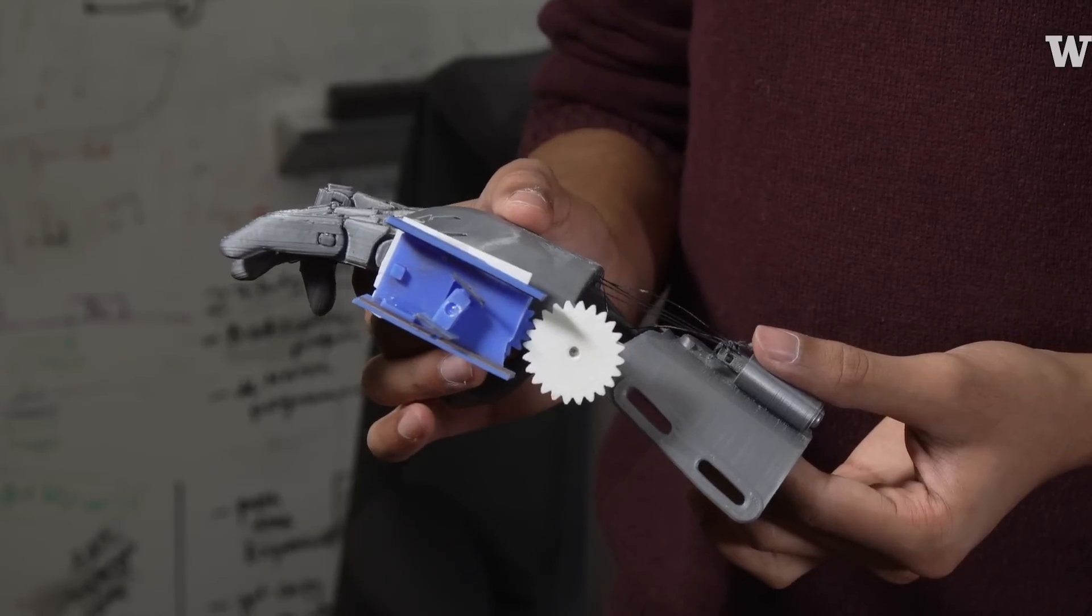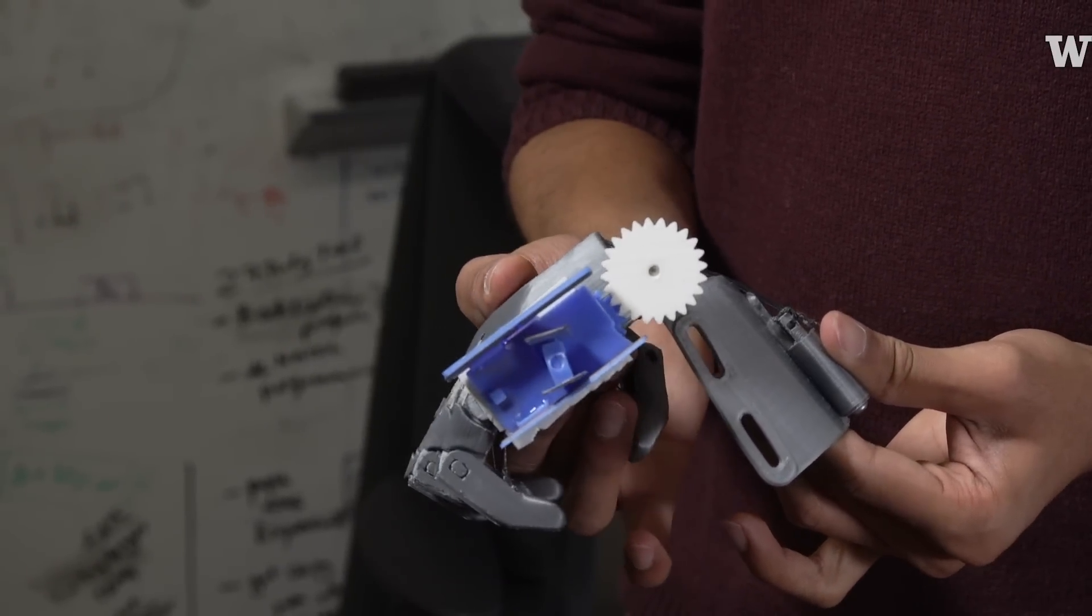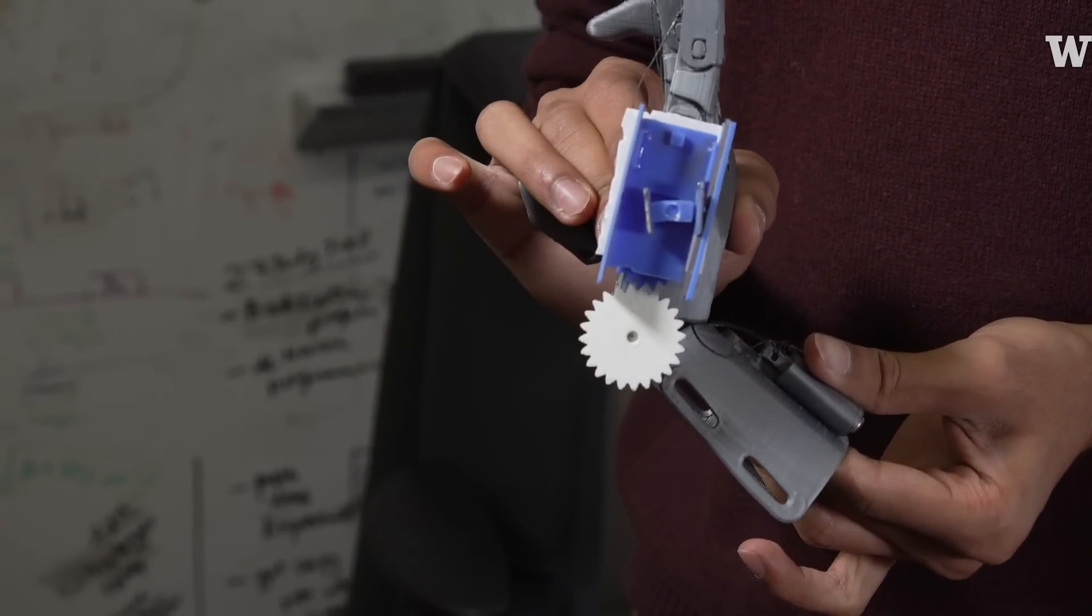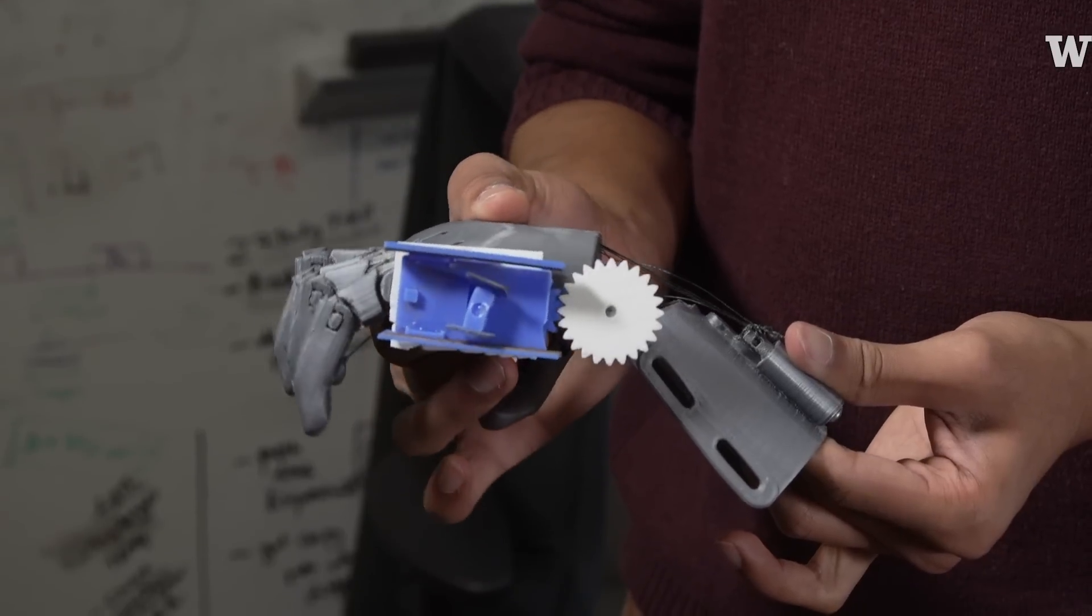Here what we have is this prosthetic hand. As they rotate their wrist joint, the fingers of the hand close.